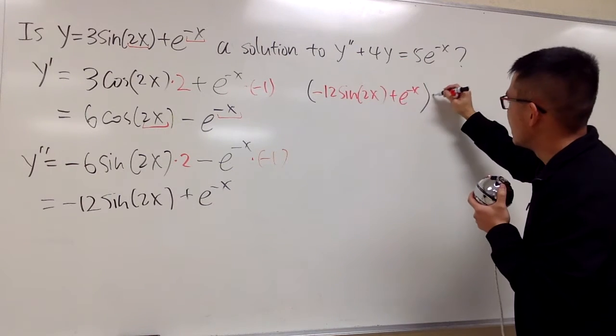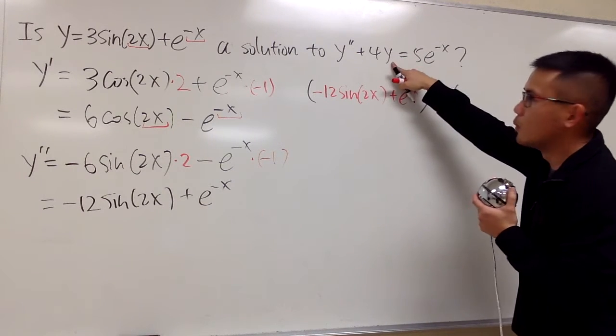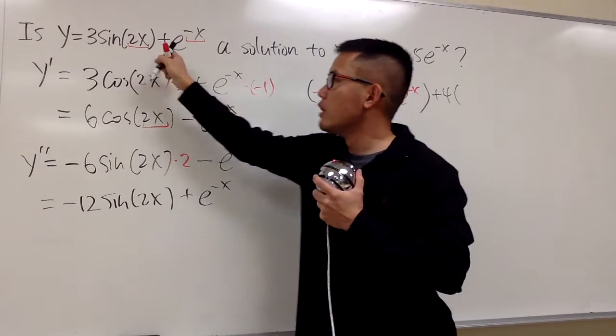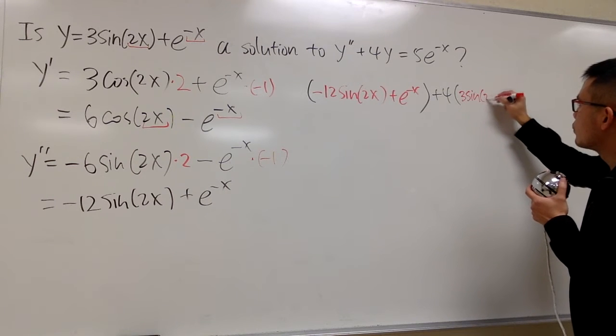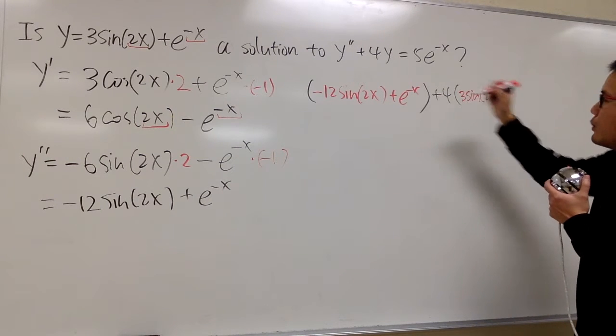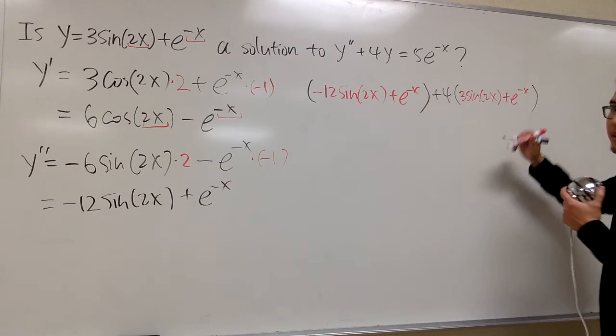Next, we'll have plus 4 times y. And the y is the original, so let me write it down, 3 sine of 2x, and we add it with e to the negative x, like this.